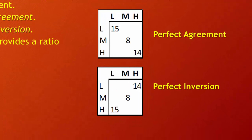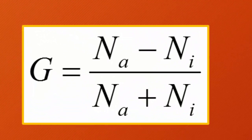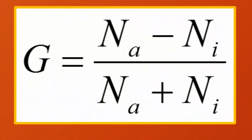This is based on looking for what's called agreement versus inversion. Imagine a table categorizing low, medium, high on the independent variable, and low, medium, high on the dependent variable. We get perfect agreement where all observations in the low category of the independent variable occur in the low category of the dependent variable, and so on. Perfect inversion is where the high category of our independent variable is predicting all the low categories of the dependent variable. A good way to assess an ordinal level relationship is with Goodman and Kruskal's gamma, which provides a ratio of agreements relative to inversions.